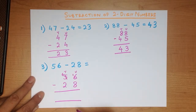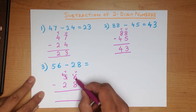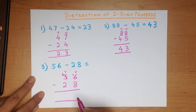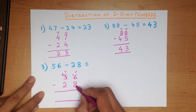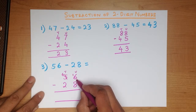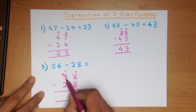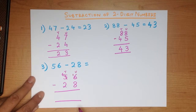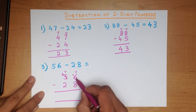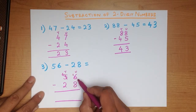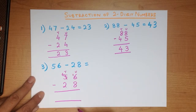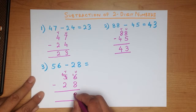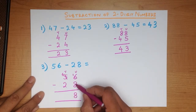Let's go through it again. We start by subtracting the column on the right-hand side first — 6 minus 8. We can't do that because 6 is smaller. So we take a 10 from the tens column, cross out that number and minus it by 1: 5 minus 1 is 4. The 1 we have taken, we add it here. It now becomes 16 minus 8. That's right, it is 8. 16 minus 8 is 8.